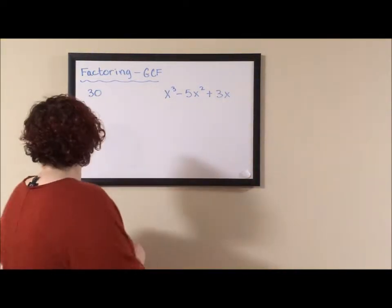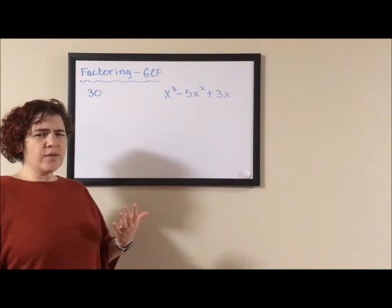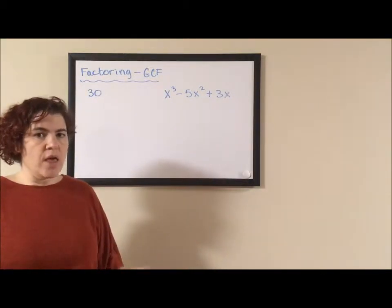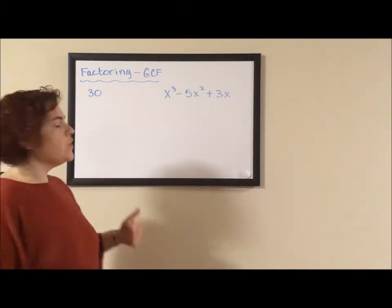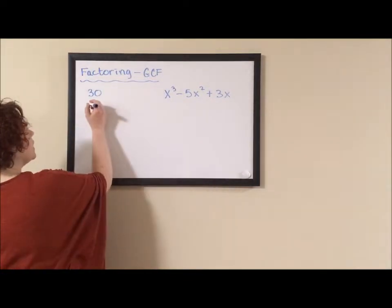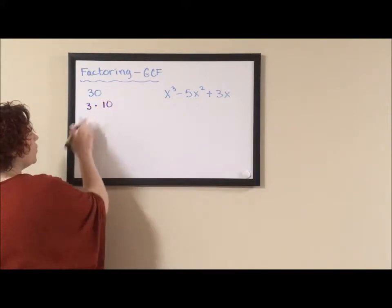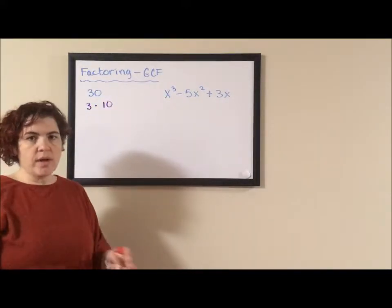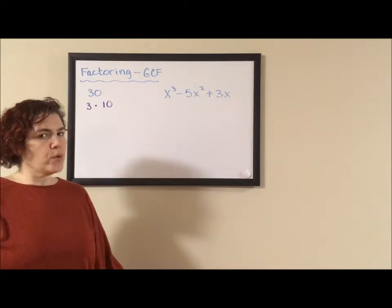When we're prime factoring a number, we're trying to find the prime numbers that multiply to the number. So, if I have the number 30, I may notice right away that 30 is 3 times 10. Now, because 3 is a prime number, I don't need to worry about breaking that 30 up anymore.